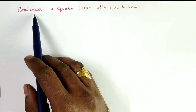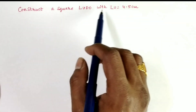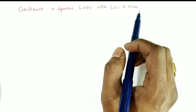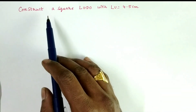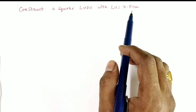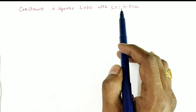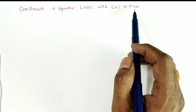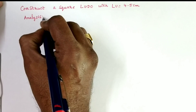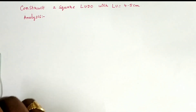The given problem is: construct a square LUDO where LU is equal to 4.5 cm. To construct any quadrilateral, we need 5 independent measurements, but here only one measurement is given. So let us go to the analysis and verify the properties of a square.